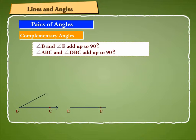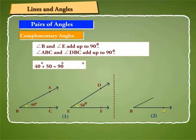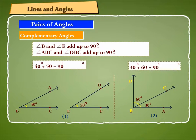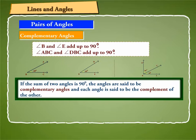In the on-screen figure 1, angle B and angle E add up to 90 degrees. Similarly, in figure 2, angle ABC and angle DBC add up to 90 degrees. Thus, if the sum of two angles is 90 degrees, the angles are said to be complementary angles, and each angle is said to be the complement of the other.